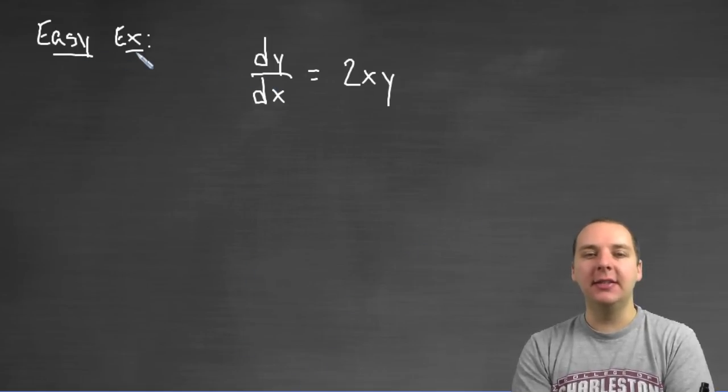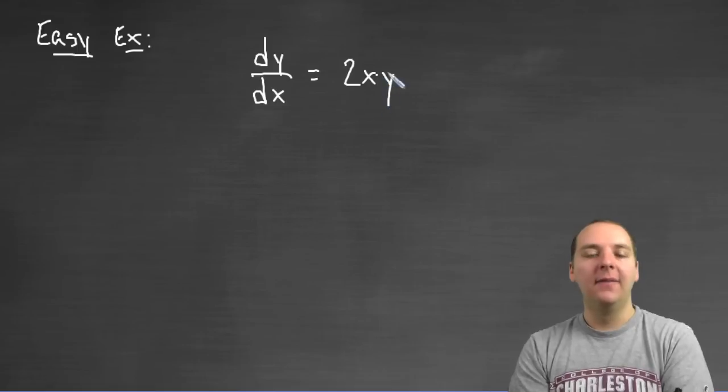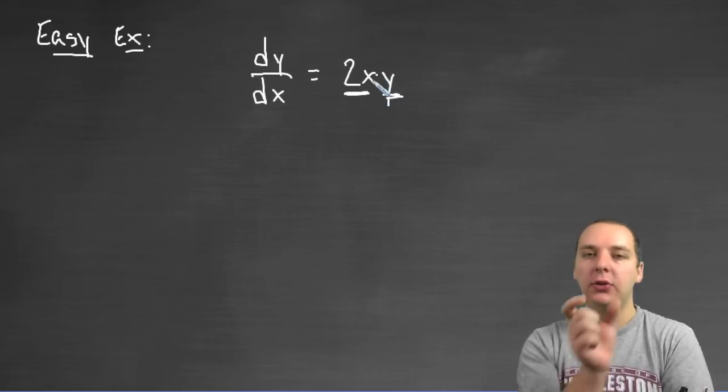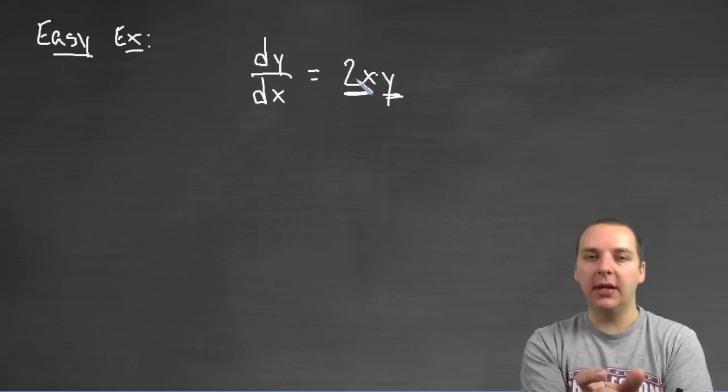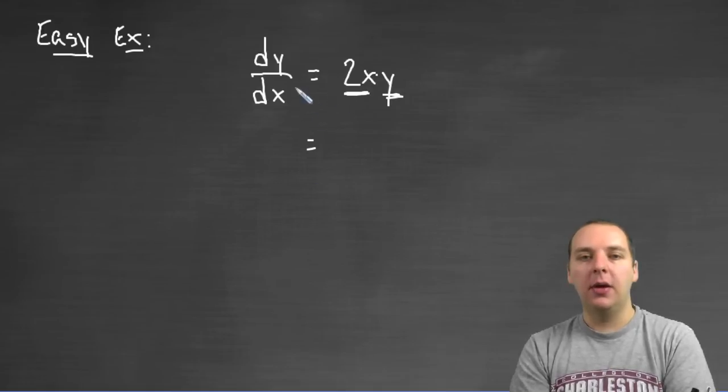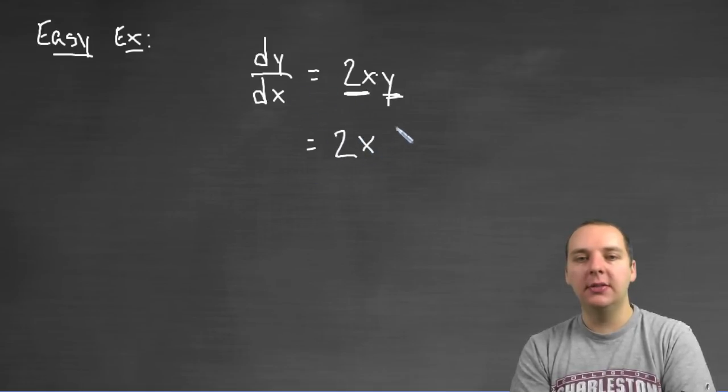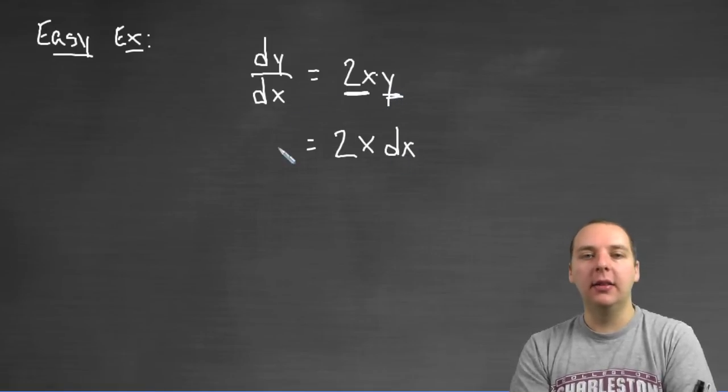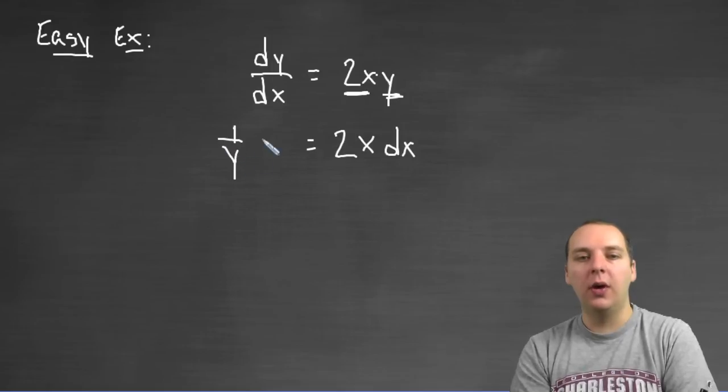This is a very easy example just to get our feet wet, we'll do some more difficult examples in the later videos. But let's say dy/dx equals 2X times Y. This is obviously separable because I wrote it that way, it's 2X times Y, it's a function of X times a function of Y. And so let's separate these variables, I'll move the dx to the right, we'll have 2X dx, and I'll divide the Y to the left, and we'll have 1 over Y dy.